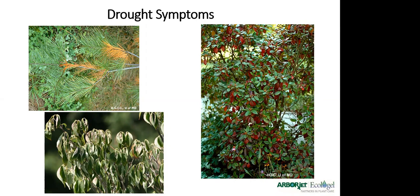Drought symptoms are very easily summed up. If you're lucky, you get the typical wilting, but rarely do we actually see that in tree material. Sometimes in a young growth or a new planting or transplant, or tender new tissue will notice it. But for the most part, drought tends to show up as dieback of the interior needles or the interior leaves of plant material, and it's usually an overall even effect in true drought conditions.